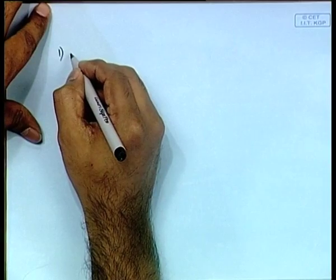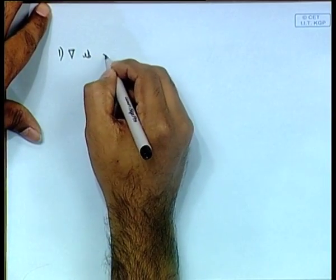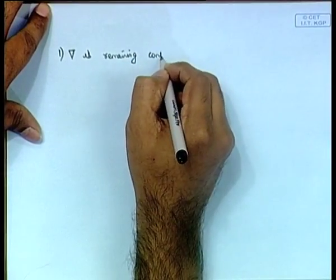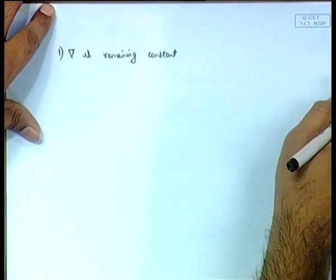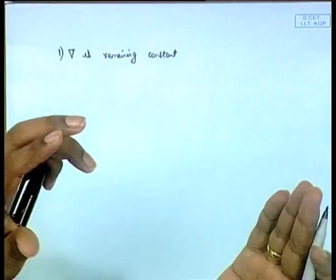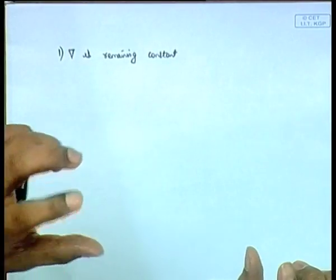Last class we mentioned the motion of the metacenter — we called it the M curve — describing how the metacenter moves along with the heeling. Note that in general we assume one thing in all cases of heeling: we assume that the displacement Δ is always remaining constant. The meaning of Δ remaining constant is that when it heels, whatever volume is going in is equal to whatever volume is coming out.